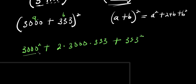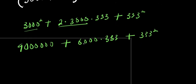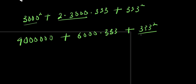What is 3000 squared? 3² is 9, and we have six zeros, so 3000² equals 9,000,000. Then 2 times 3000 is 6000 times 333. And we also need 3333 power of two, so let's multiply 3333 times 3333.